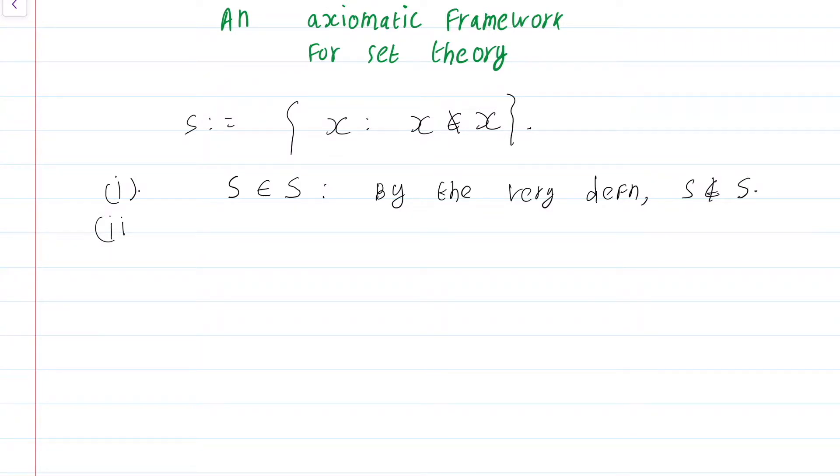The other possibility is S is not an element of S. Well, then again by the very definition S is in S. We end up with a neat little paradox. A paradox is a situation in which both a statement and its negation have some sort of argument supporting them. This paradox shows that if we are not careful about how we define sets, it could lead to major issues.